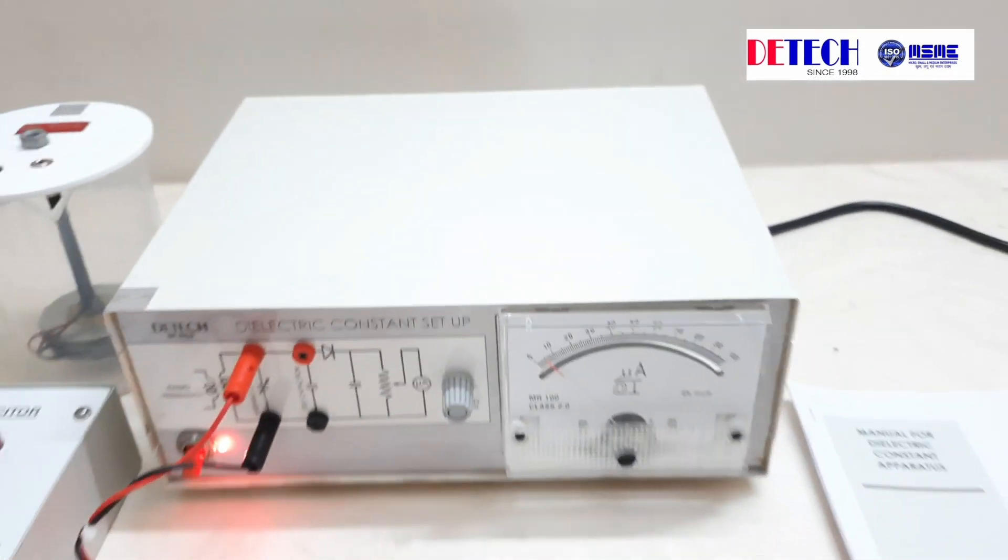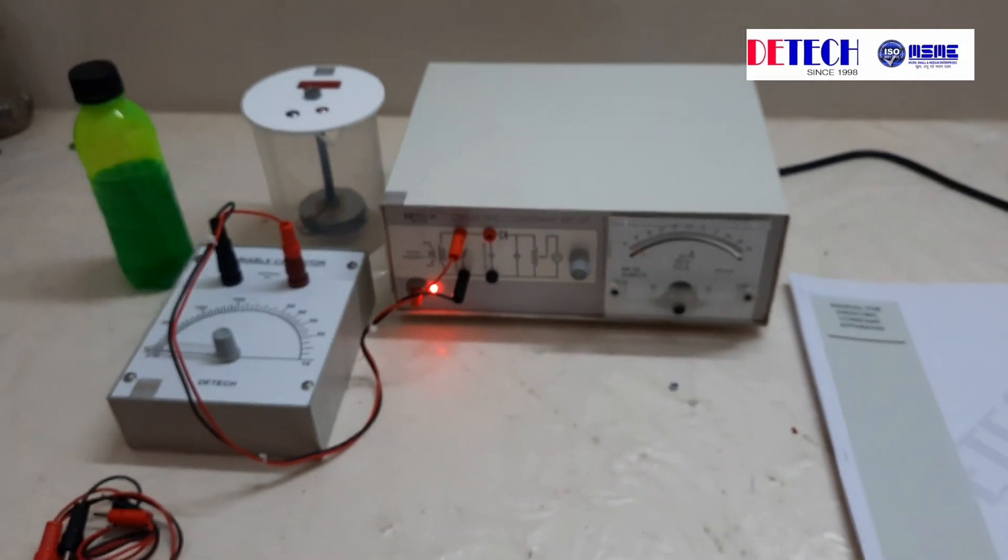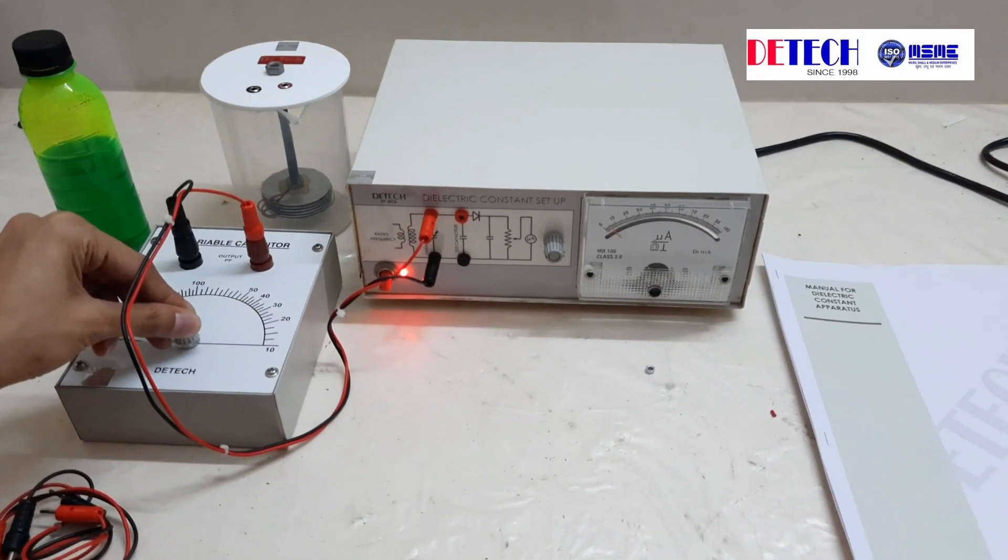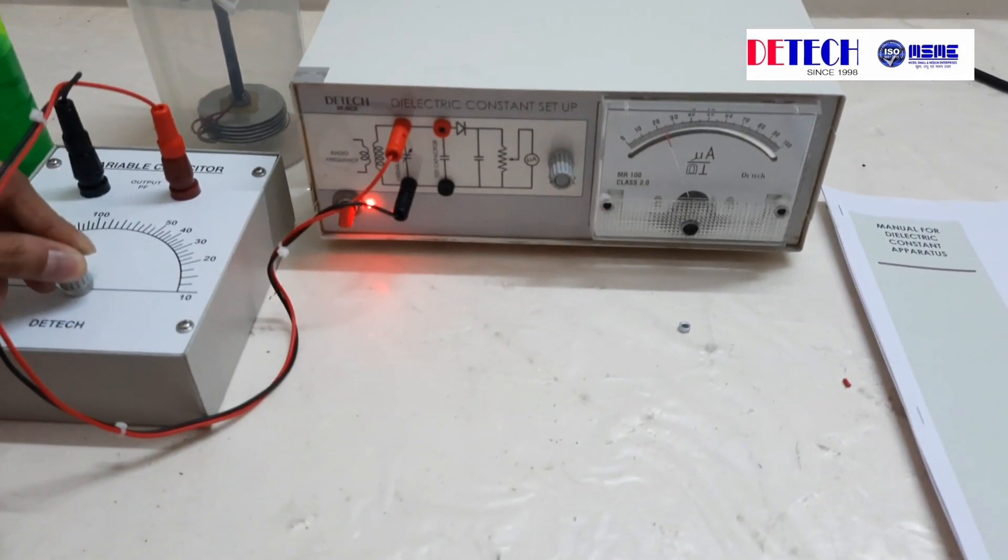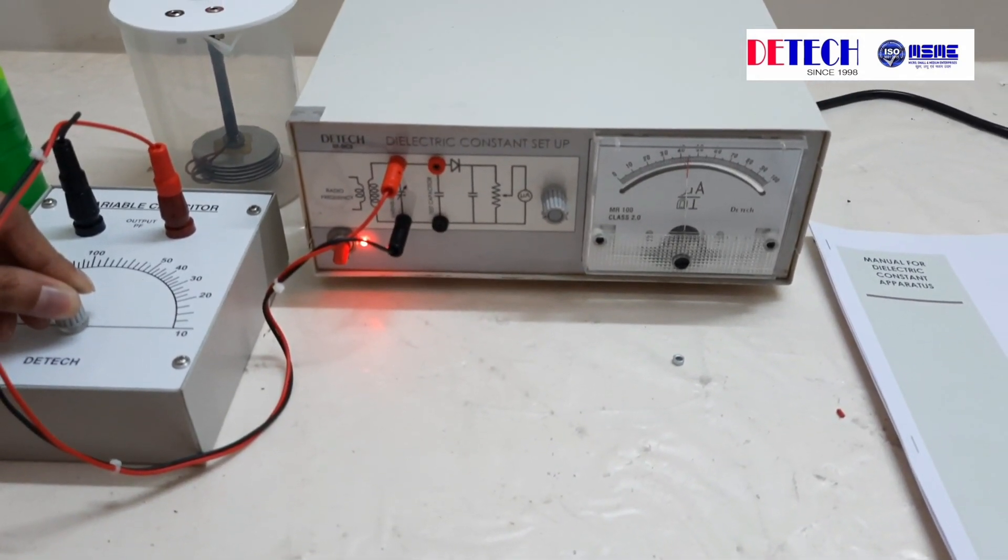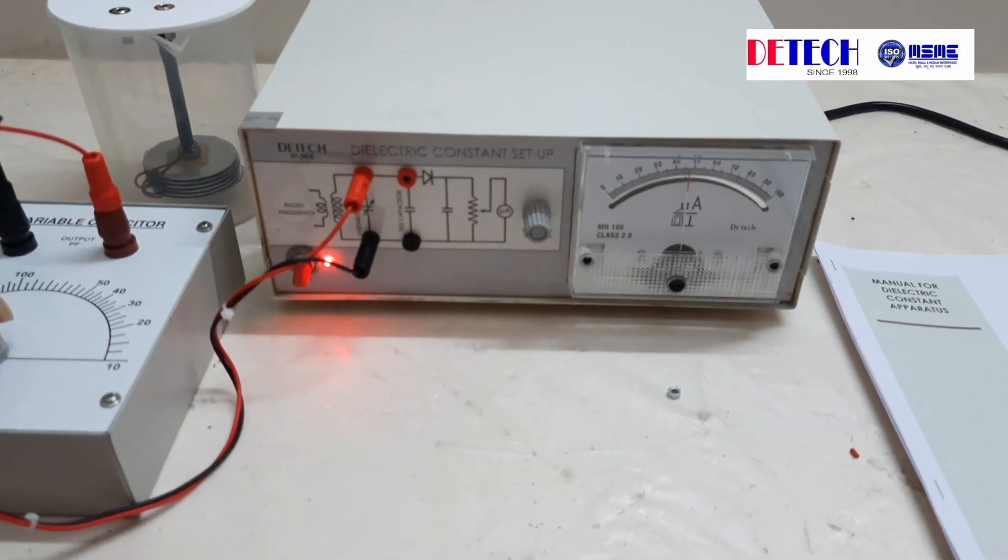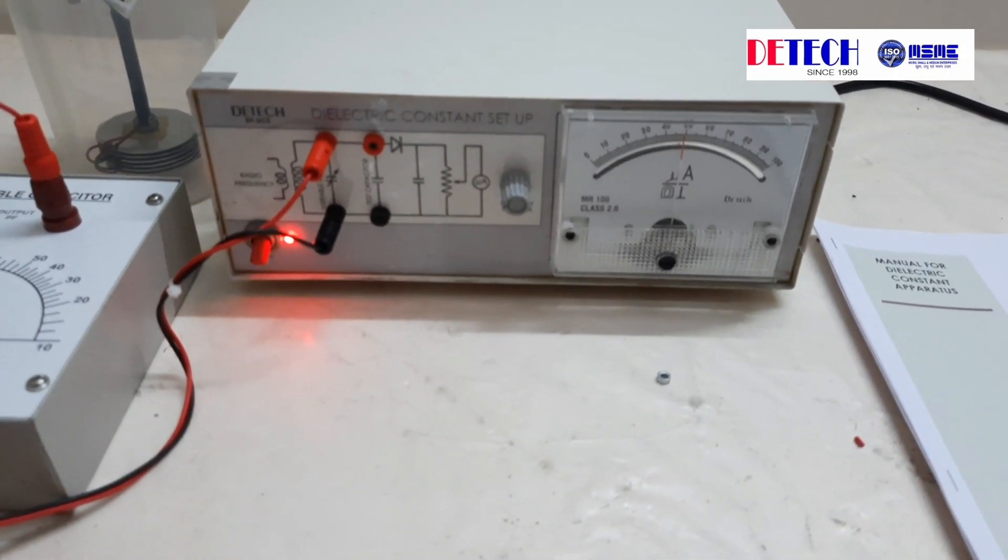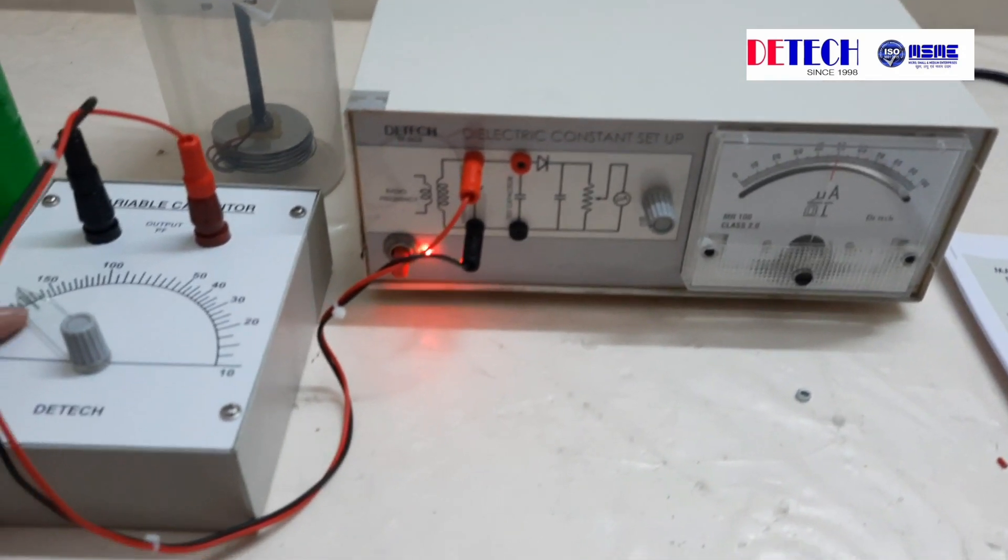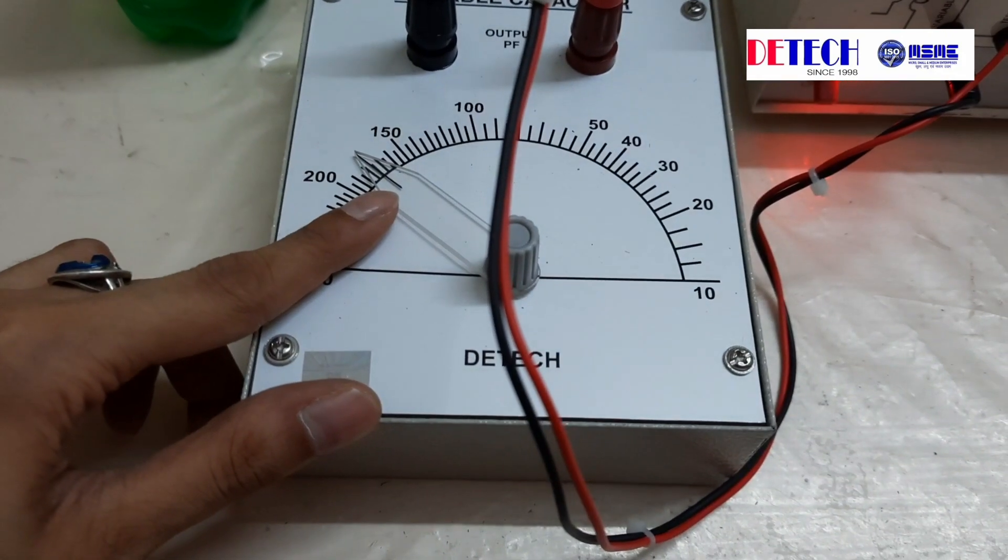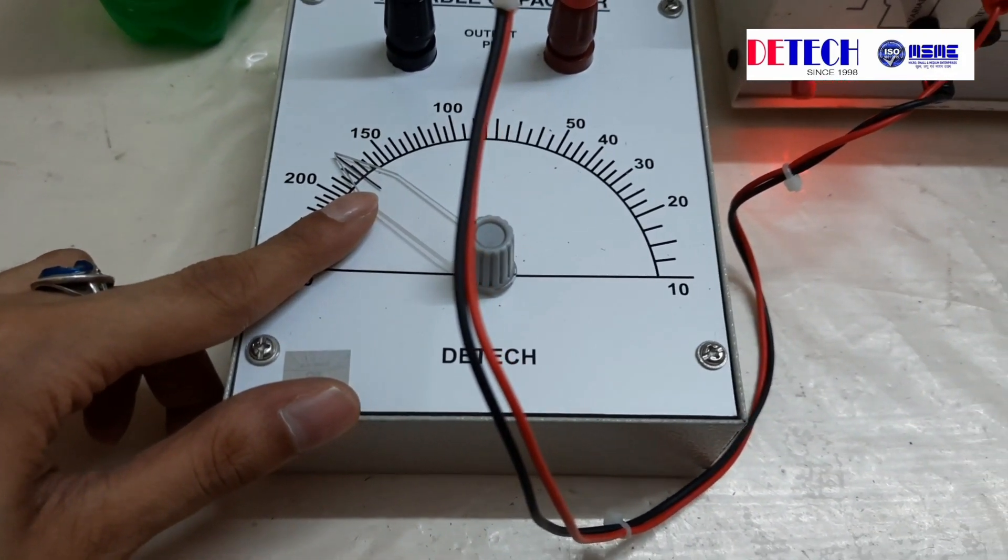So now we are changing the variable capacitor and we'll note the maximum current. So this is the maximum current, after which it starts to decrease. We don't have to note the current, we have to simply note the value of the picofarad from the variable capacitor box, which is coming around 160, 175 picofarad.